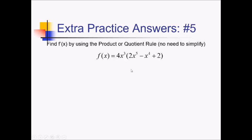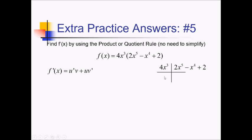On this problem, they want us to find the derivative of this product specifically by using the product rule. The fastest way would probably be to distribute the 4x cubed and use the power rule, but they want you to demonstrate the product rule. So: u prime v plus u v prime. I've got my two factors: 4x cubed, and 2x to the fifth minus x to the fourth plus 2. Their derivatives are 12x squared, and 10x to the fourth minus 4x cubed — that 2 just goes away because the derivative of a constant is 0.